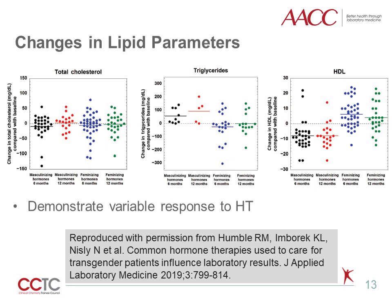In contrast to the consistency of hemoglobin and hematocrit, lipid parameters exhibit variable or limited change. This study documents little change in total cholesterol overall in individuals on masculinizing or feminizing hormone therapy, as shown by the plot on the left. The plot in the center demonstrates an increase in triglycerides for those on masculinizing hormone therapy at six months, shown by the black dots. Finally, in the plot on the right, they document a decrease in HDL in the population on masculinizing hormone therapy for six and 12 months, the black and red dots, and an increase in HDL among individuals on feminizing hormone therapy, especially at six months after starting therapy, the blue dots.